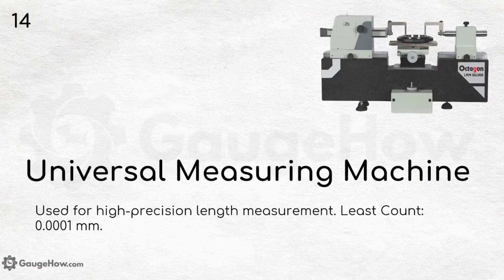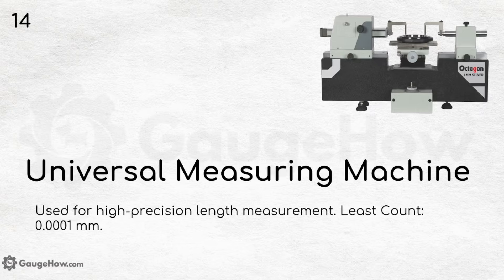Universal measuring machine. Used for high precision length measurement — you might see this in very large workshops. The least count for this machine is 0.0001 mm.